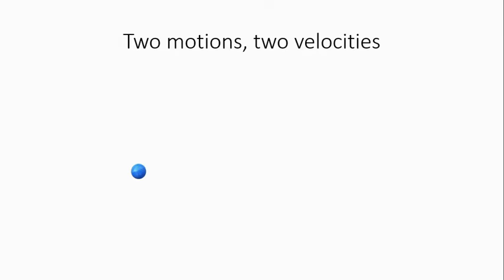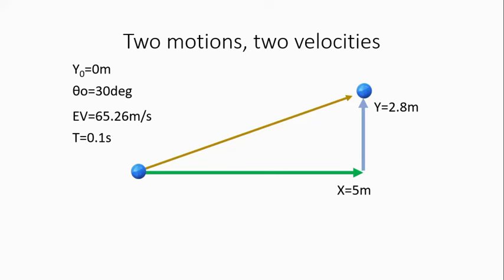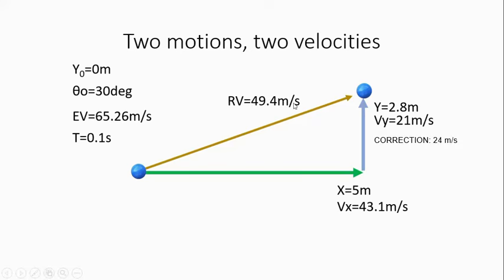Another concept we have to visit is the concept of two motions and two velocities. Let's say you shoot your ammo from ground level — the height of your forks is 0 meters — under an angle of 30 degrees at an exit velocity of 65.26 meters per second. We see what happens in 0.1 seconds: the ammo makes a trajectory where horizontally it is displaced to a certain distance and vertically to another. Horizontally it made 5 meters of range and vertically its height is 2.8 meters — almost two times less.